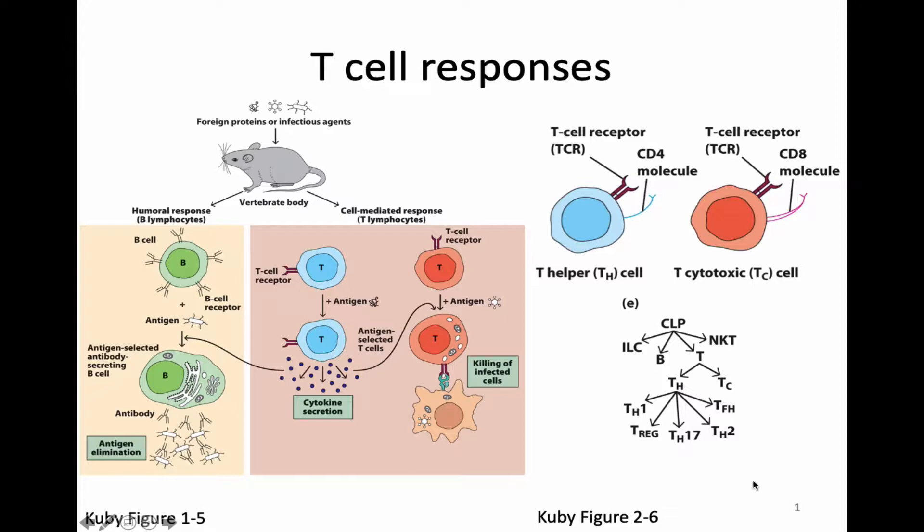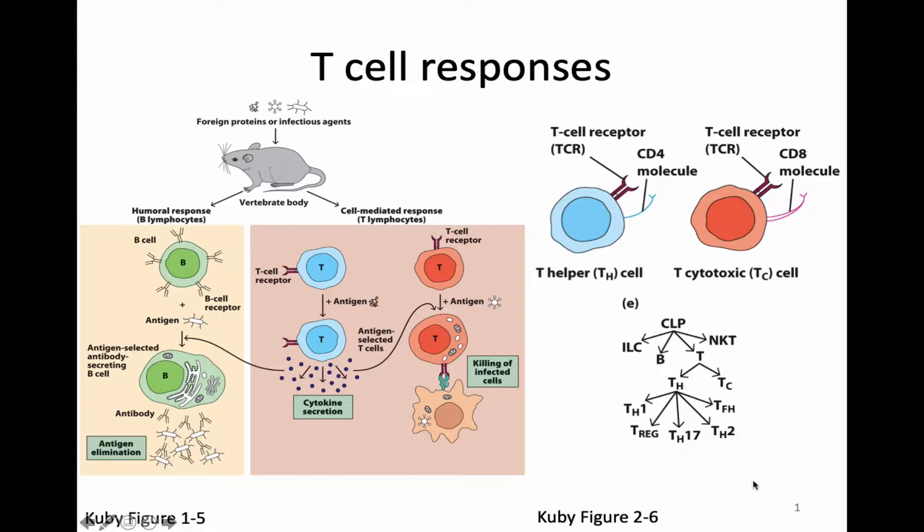At this point in the semester, we're talking about introducing ourselves to T cell responses. We've previously talked about B cells, the way that they can respond to antigen and potentially make antibodies, and we're starting to look at the parallel process for T cells. T cells, of course, have a unique receptor, the T cell receptor, just like B cells have a unique receptor, the B cell receptor.